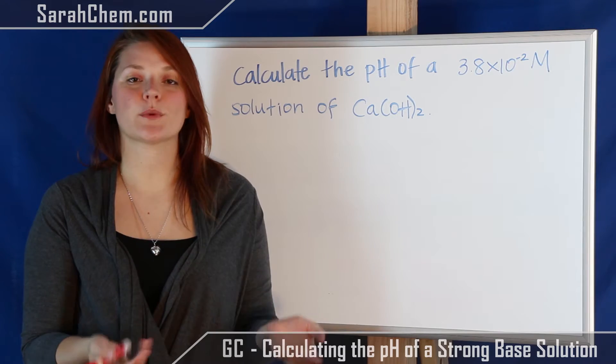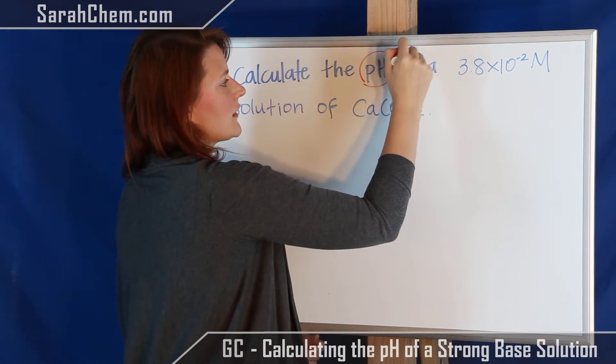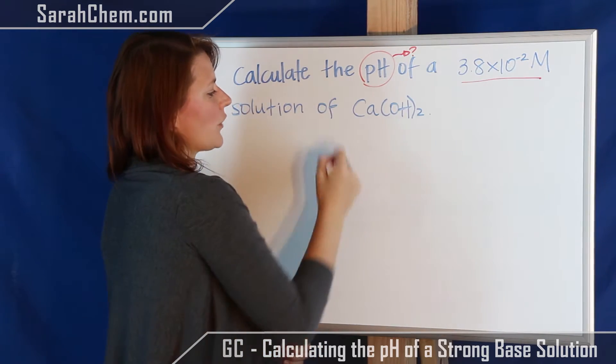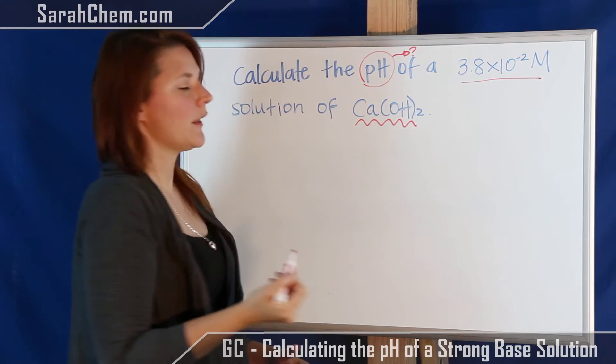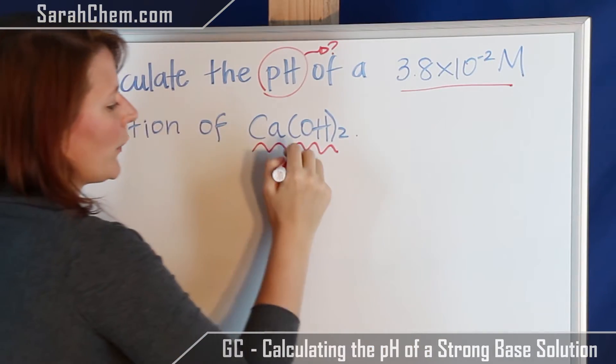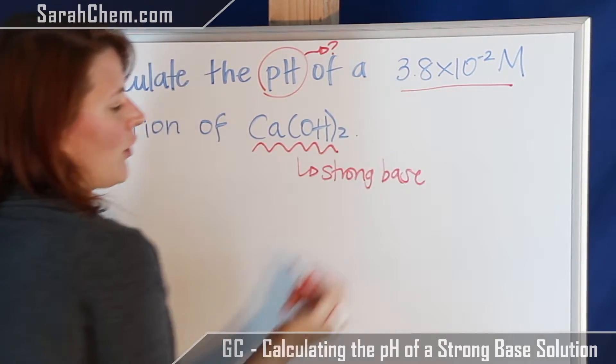So the first thing we want to do is pull out the relevant pieces of information. We see that we are calculating the pH, so that's the answer to the question we're looking for. We're also told the concentration of this substance here. So the first thing you want to figure out is, what is that substance? We know that this here would be a strong base, calcium hydroxide.